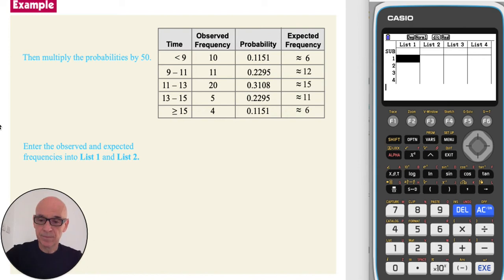Now ready to type in the observed and expected frequencies. In list 1, that's 10, 11, 20, 5, and 4 for the observed frequencies. In list 2, 6, 12, 15, 11, and 6 for the expected frequencies.